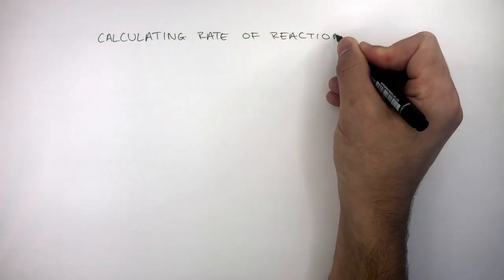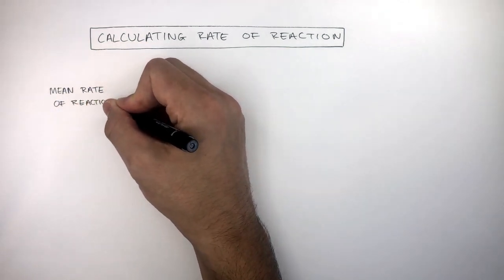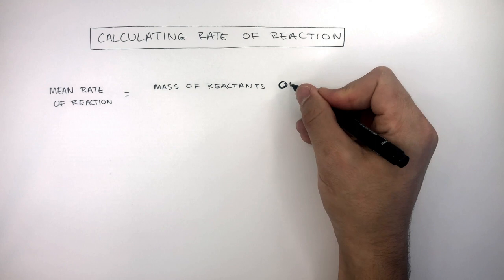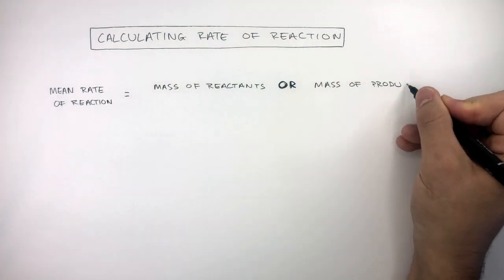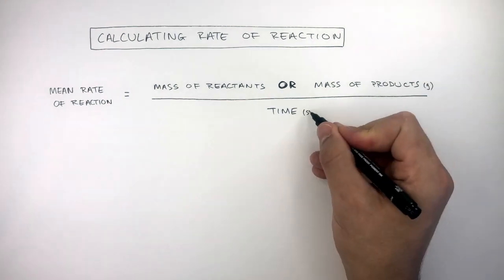Calculating the rate of reaction is done by using an equation. The mean rate of reaction equals the mass of the reactants or the mass of products divided by the time. The unit of mass is grams and the unit of time is seconds.